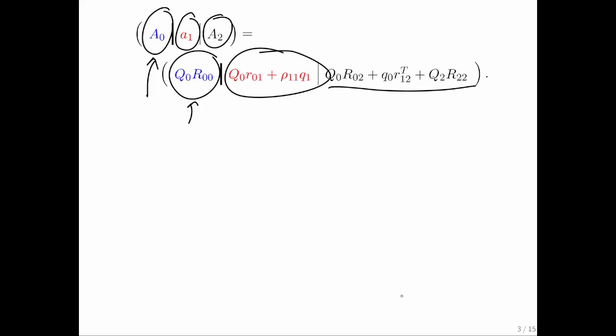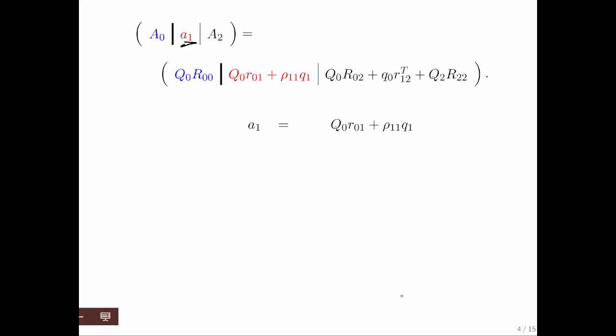The question now is how to move forward. Well, we know that A1 has to equal Q0 R01 plus rho11 Q1. So let's write that right here. We can multiply both sides by Q0 transpose. Equality does not change if you multiply both sides by the same matrix from the left. If we then distribute Q0 and recognize that a scalar can always be brought out front, we get this right here. But notice that Q0 transpose Q0 is just the identity. And notice that Q0 transpose Q1 is the vector that you get by taking dot products of those columns with Q1. But all of the columns in Q0 we want to be orthogonal to Q1, so that term disappears.